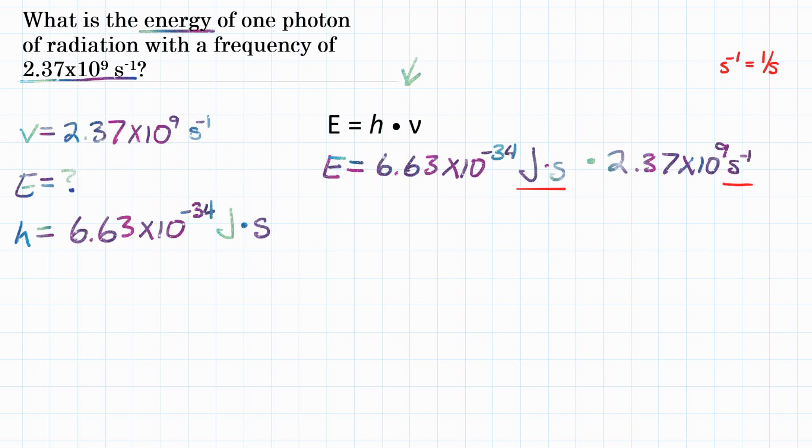So it's on the bottom of the fraction, essentially. And in our Planck's constant, we have seconds on top of a fraction or over 1. So what's going to happen is those are going to cancel out, and we're going to be just left with the unit of joules, which makes sense because we're looking for energy.